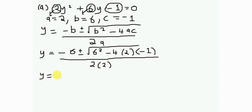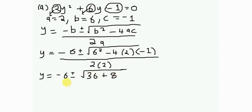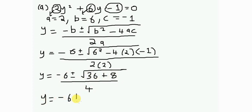So y equals negative 6 plus or minus the square root of 36 — since negative 4 times 2 times negative 1 gives positive 8 — so that becomes the square root of 36 plus 8, which is the square root of 44.